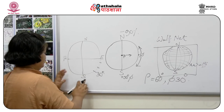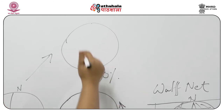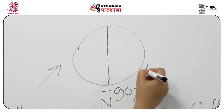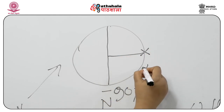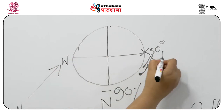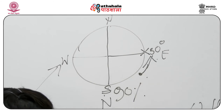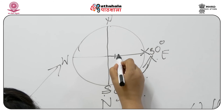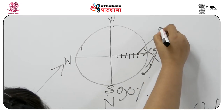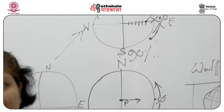Next, rotate the tracing paper so that the phi = 30° mark lies on the east-west axis of the Wulff net. Then count 60 degrees inward from the primitive circle along the east-west great circle to measure the rho angle. The resulting point is the plotted face with rho = 60° and phi = 30°. This is the basic procedure for using a stereonet.